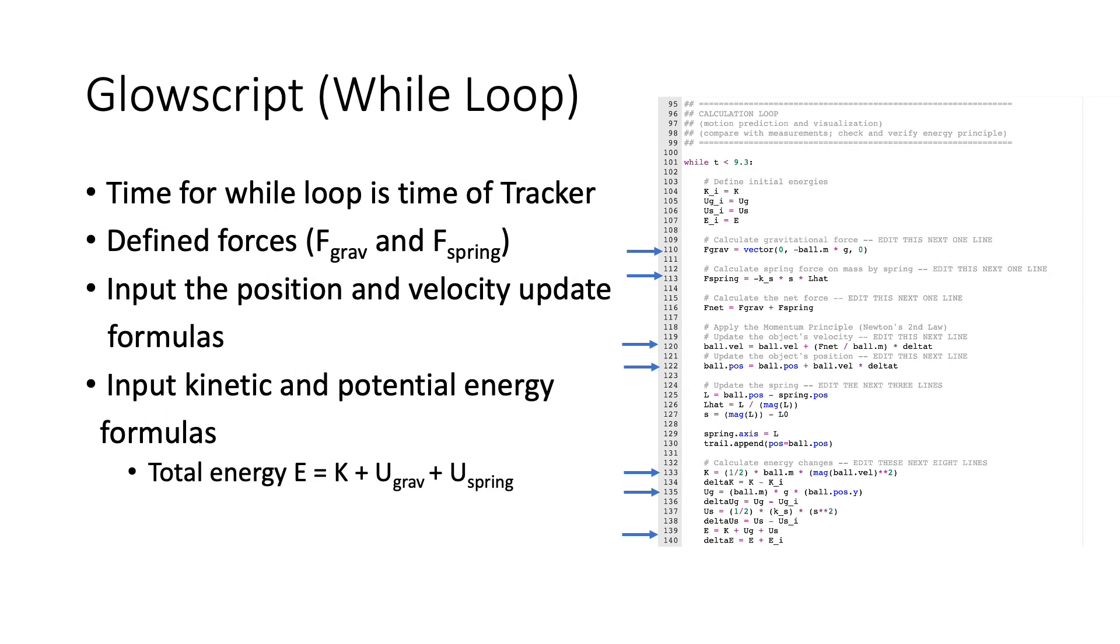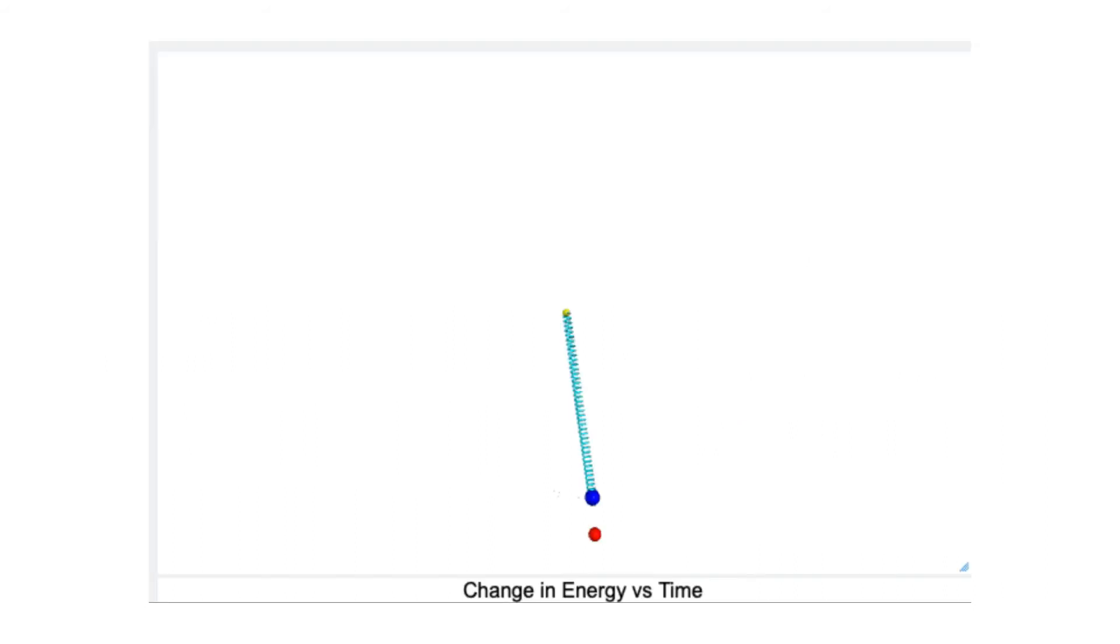The total energy is E equals K plus U grav plus U spring, U being potential energy. This is my video of the movement. The blue ball represents what actually occurred, the movement in Tracker, and the red ball is the simulated movement.